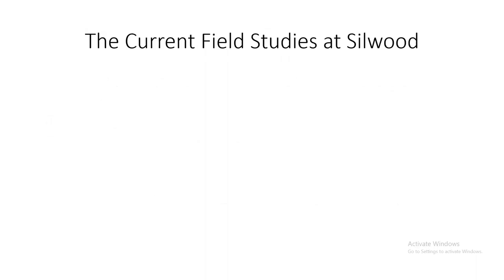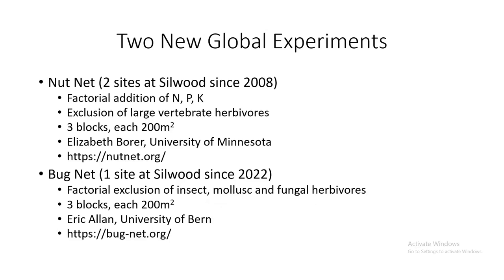Let me introduce two new field studies that you yourselves might be interested in joining as a way for young scientists to get involved in joint publications. The first is called NutNet, with two sites at Silwood since 2008. It's a very simple experiment repeated globally with a factorial addition of three nutrients — nitrogen, phosphorus and potassium — and exclusion of large herbivores. If you're interested, get in touch with Elizabeth Borer at the University of Minnesota.